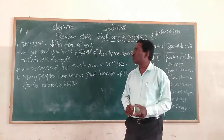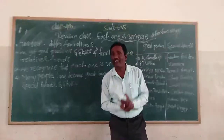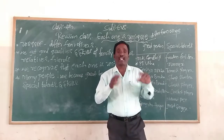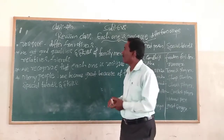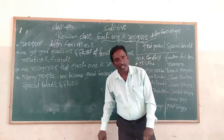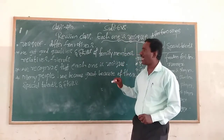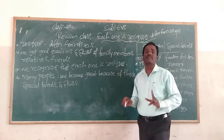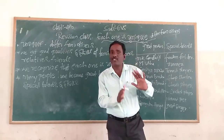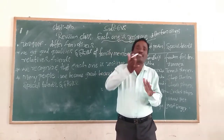We got good qualities and skills of family members, relatives and friends. We recognize the good qualities of friends, relatives, and family members, and they accept the good qualities. We recognize that each one is unique in our society, in our family, in the school environment. Each student is unique and different from other students.